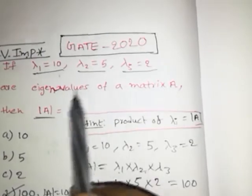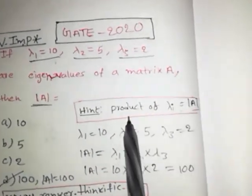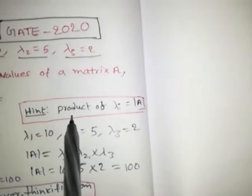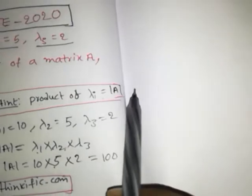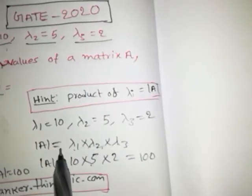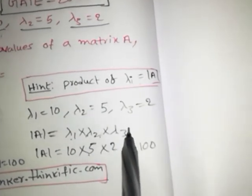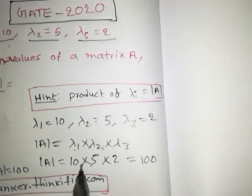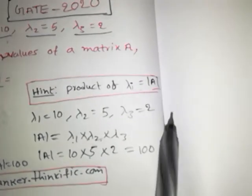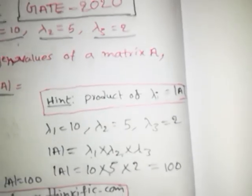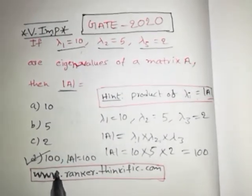Since three eigenvalues are given, this is a 3×3 matrix. To find the determinant, we use the condition: product of eigenvalues equals determinant of the matrix. So det(A) = λ1 × λ2 × λ3. Substituting the three given eigenvalues gives det(A) = 100. Thank you.